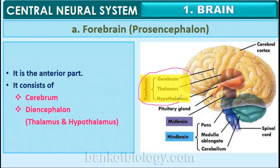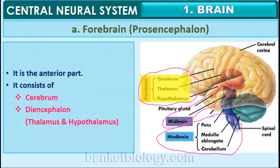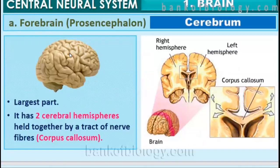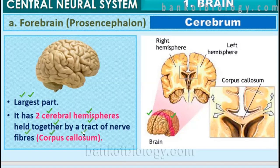The forebrain is the largest part of the brain and is made up of two cerebral hemispheres. These two cerebral hemispheres are held together by a tract of nerve fibers called the corpus callosum. The outer part of the cerebrum is called the cerebral cortex, which has convolutions and depressions and is formed of gray matter.